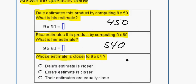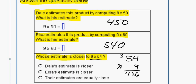We can also check by multiplying out 9 times 54. So 54 times 9 equals, 9 times 4 is 36, 9 times 5 is 45, plus 3 is 48.